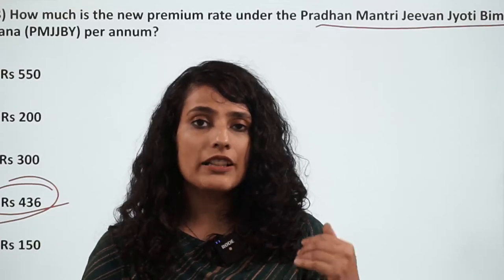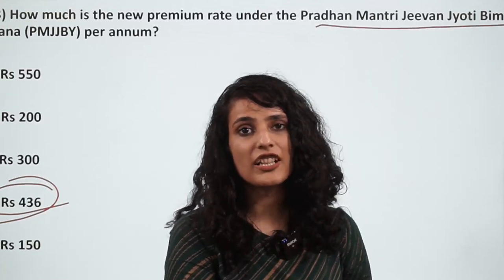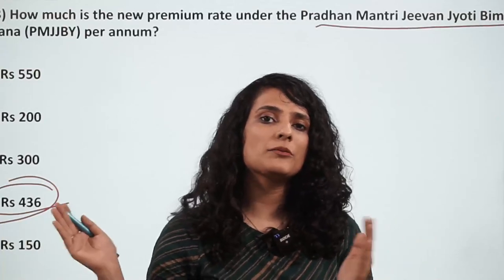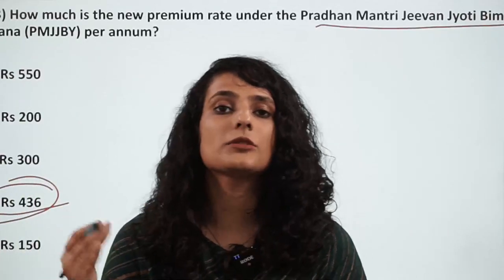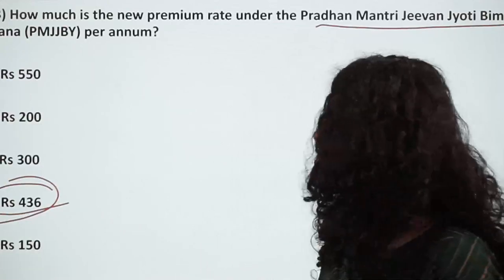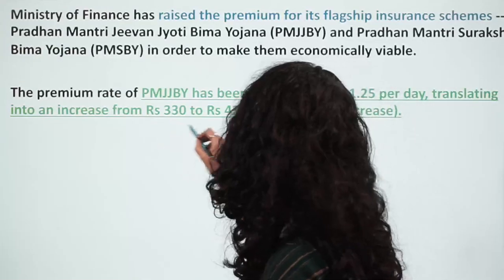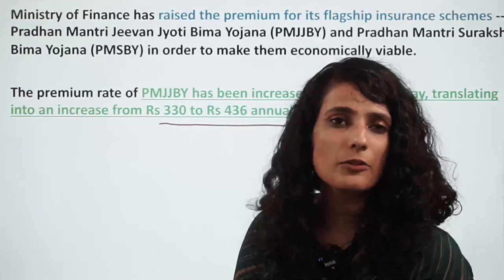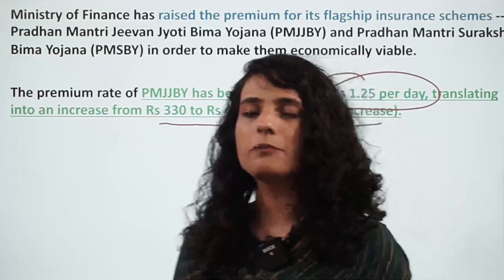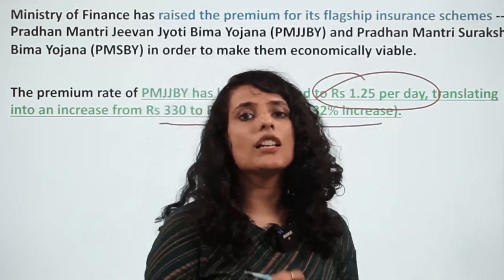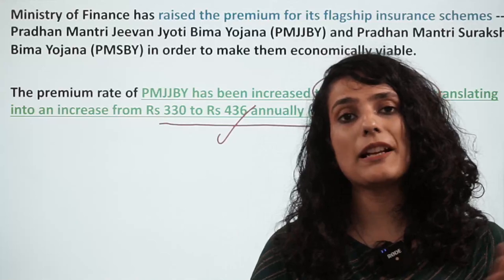Insurance and government scheme premiums will also be indexed according to the prevailing rate of inflation. In sari schemes ko running and viable rakhne ke liye, the amount has been increased by 32%, or to an equivalent of rupees 1.25 per day, translating to a total annual premium of rupees 436, which is still not very expensive and remains economically very viable for the basic beneficiaries of the scheme.